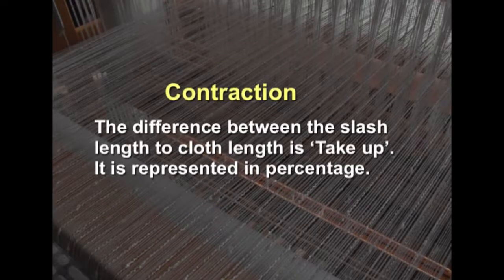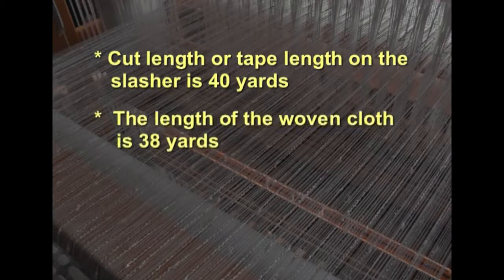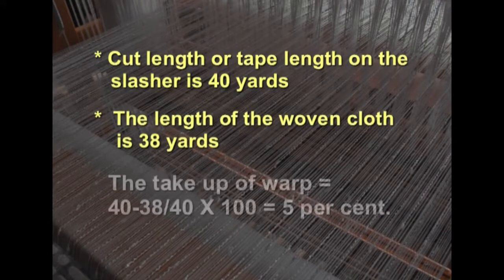For example, if the cut length or tape length on the slasher is around 40 yards and the length of the woven cloth is around 38 yards, then the take-up of warp is equal to (40 minus 38) divided by 40, multiplied by 100, giving around 5 percent. When calculating how much material is required — the length and width — we have to take the length into consideration and calculate it depending upon the dimensions of the fabric.